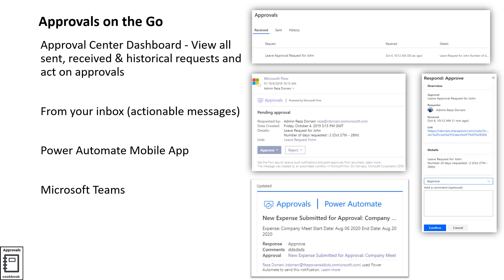External users can also be added as approvers in your approval process. There are multiple ways to perform approvals: you can go to the approval dashboard, which is your one-stop shop for all approvals — you can see sent or received approvals and historical requests. You can also take decisions directly from your inbox through actionable messaging, or use the Power Automate mobile app to respond to an approval action.